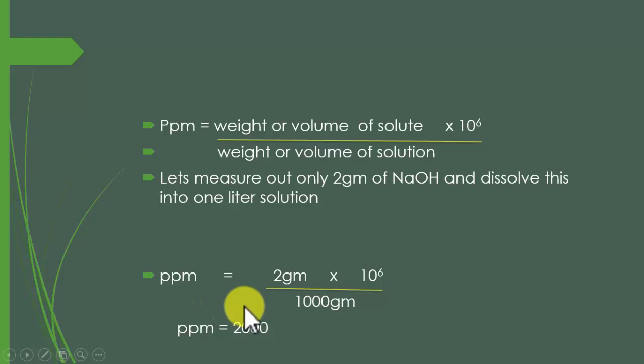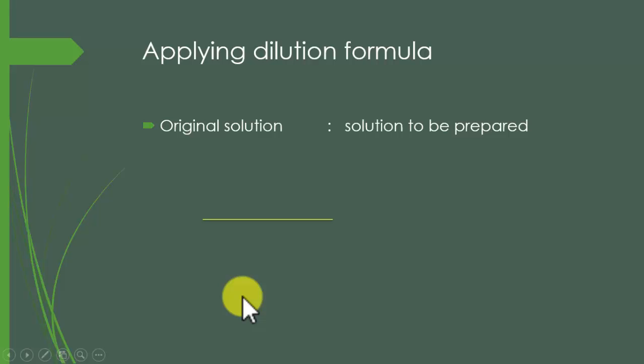Here is the dilution formula: C1V1 equals C2V2. The original concentration C1 means original concentration, which is 2000ppm, which we have just prepared.